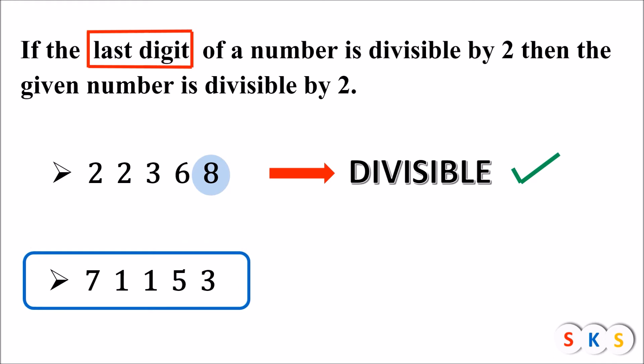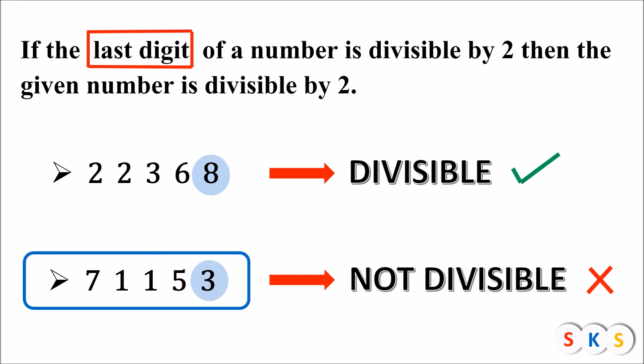Is this number divisible by 2? Look at the last digit of this number. It is 3. Is 3 divisible by 2? No, 3 is not divisible by 2 since 3 is not a multiple of 2. Therefore, the given number is not divisible by 2.